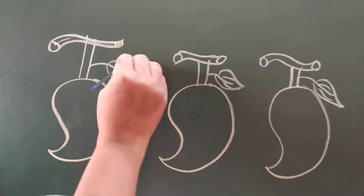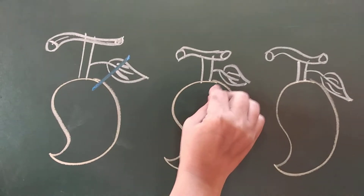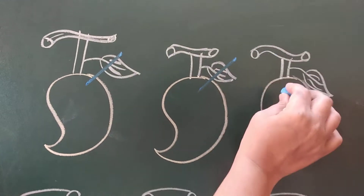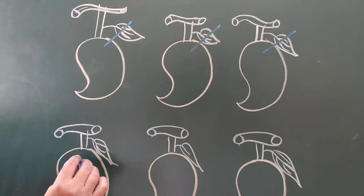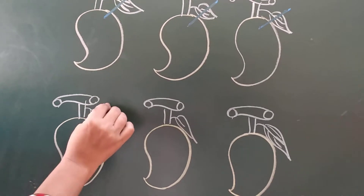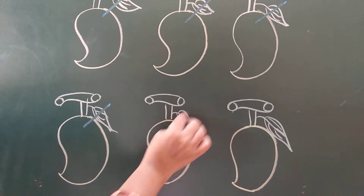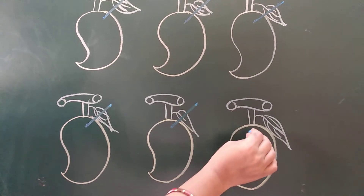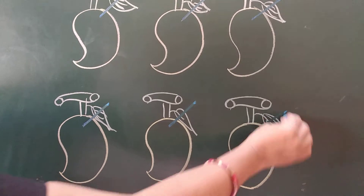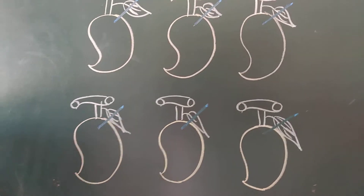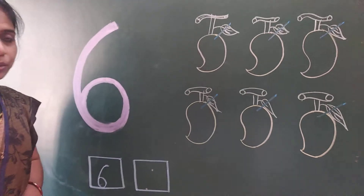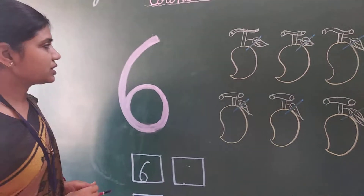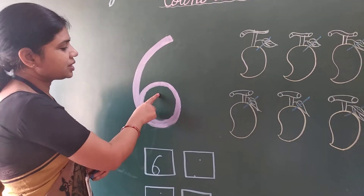1, 2, 3, 4, 5, 6. How many mangoes are here? 6 mangoes. So this is number 6.